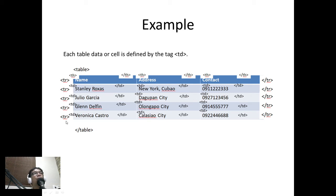Then on the last row TR, so that's the last row, then we have again the data. So we have TD Veronica Castro slash TD, TD Calasiao City slash TD, then we have the cell phone number slash TD and then slash TR. Then of course since that's the last row, then we have the slash table.